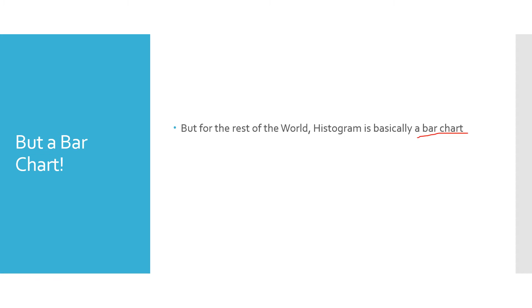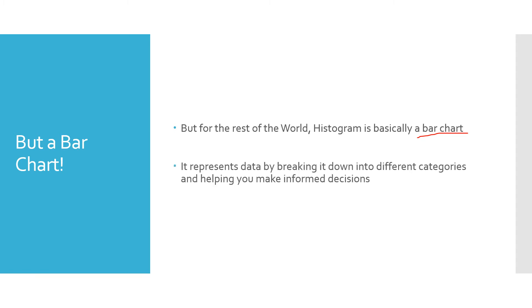For the rest of the world, a histogram is basically a bar chart, which will become clear when we look at an example. A histogram represents data by breaking it down into different categories, helping you make informed decisions — that is the key value of a histogram.